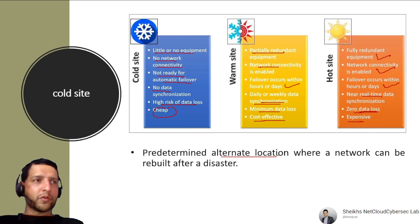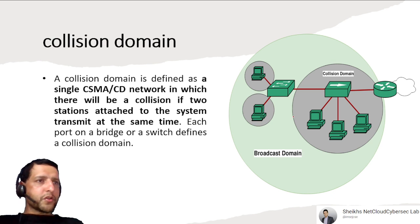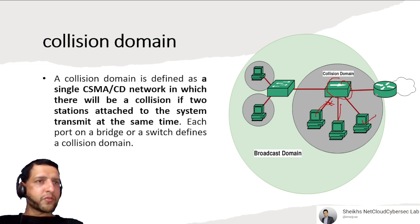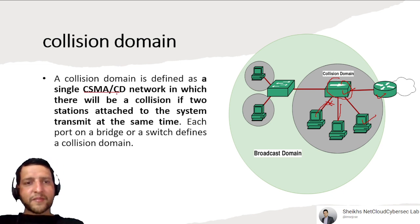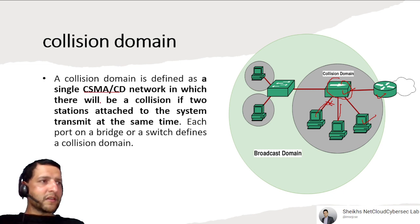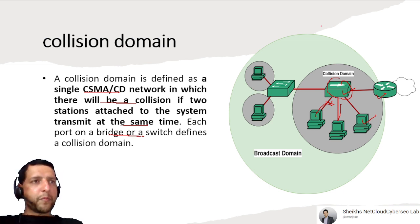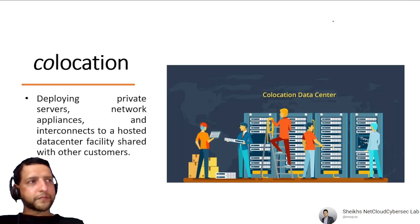A Collision Domain is defined as a single CSMA/CD network in which a collision occurs if two stations transmit at the same time. All devices in the domain can detect the collision. Each port on a bridge or switch defines a separate collision domain — so a 5-port switch has five collision domains.